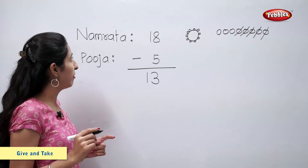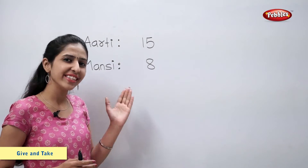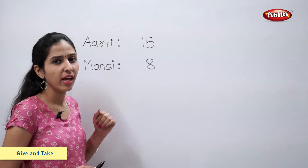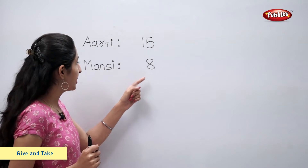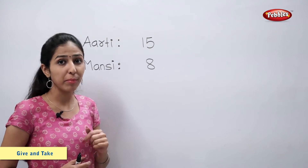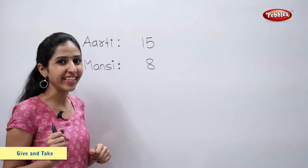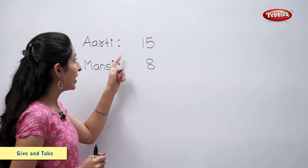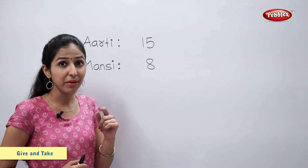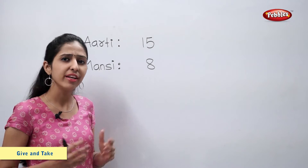So Namrata is now left with 13 pearls. Let's solve this example. Aarti had 15 pearls. She gave 8 pearls to Mansi. Now we have to find the number of pearls left with Aarti. Let's find out. Aarti had 15 pearls.